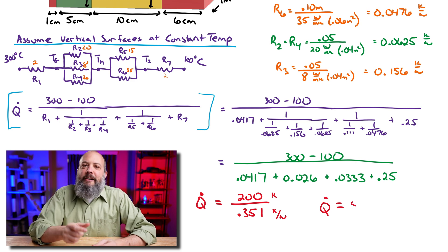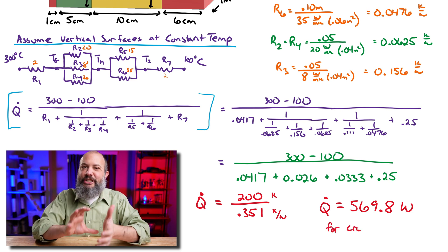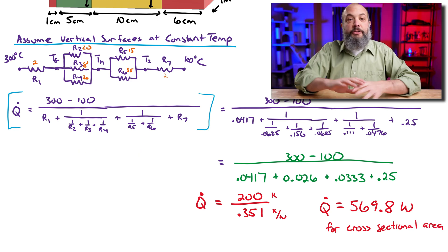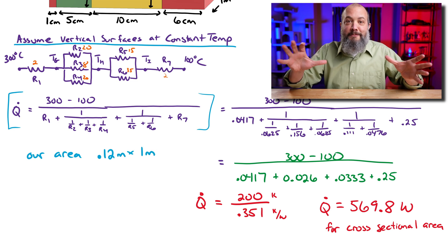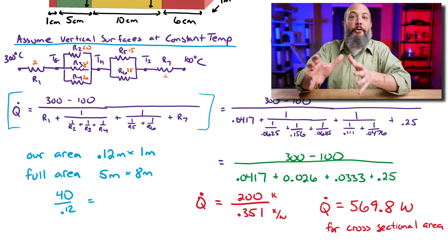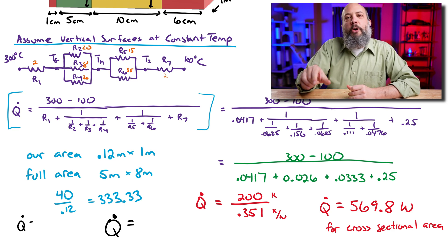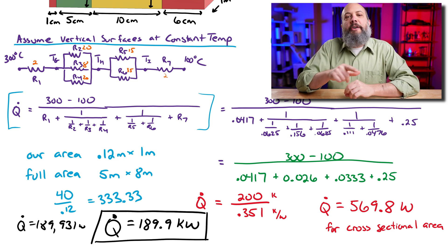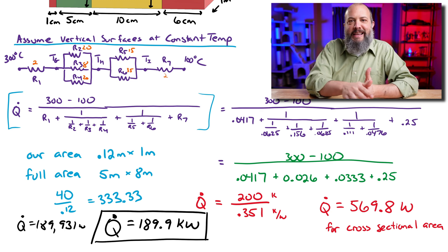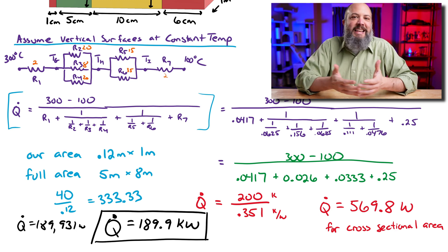This gives a value of q-dot of 569.8 watts — but this is only the heat transfer through this small cross section of the wall. The full wall is actually 40 m², not just 0.12 m². Since the full area is 40 m² and our cross section is only 0.12 m², we multiply by 333 to scale up and get a total heat transfer of 189.9 kilowatts. This represents an upper bound — the maximum possible heat transfer — since we gave the most generous assumption, allowing heat to instantaneously jump vertically to find the easiest path.